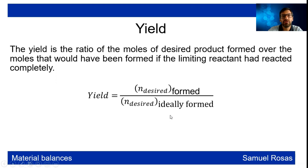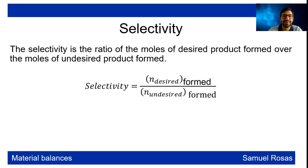Yield is the ratio of the moles of the desired product formed over the moles that would have been formed if the limiting reactant had reacted completely — or the ideally formed number of moles. Selectivity is the ratio of the moles of the desired product formed over the moles of the undesired product that is formed. Sometimes you have reactions where you have an undesired product.